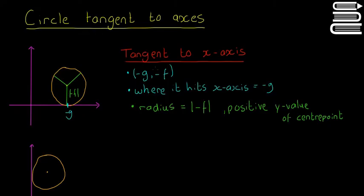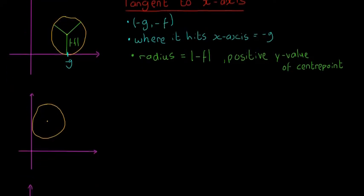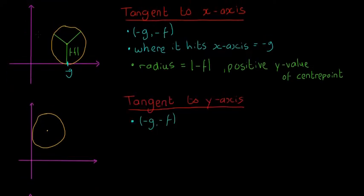For a circle tangent to the y-axis, it's almost the same but reversed. The centre point is still (-g, -f). The value -f is the y-coordinate, showing how high up the centre point is. The circle hits the y-axis directly beside the centre point, so where it hits the y-axis is equal to -f.